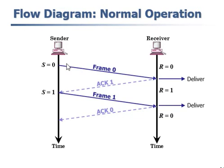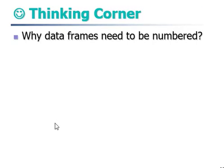Flow diagram. This is normal operation. In this we are sending the frame. It is receiving. It is sending acknowledgement frame. And it is receiving. Now we have to think why frames have to be numbered.